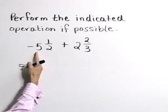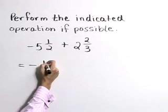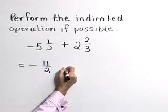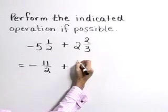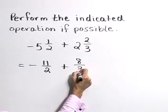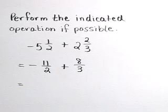2 times 5 is 10, plus 1 is 11. So that's a negative 11 halves. 3 times 2 is 6, plus 2 is 8. So that fraction in improper form is 8 thirds.